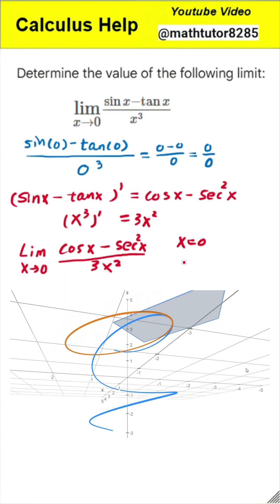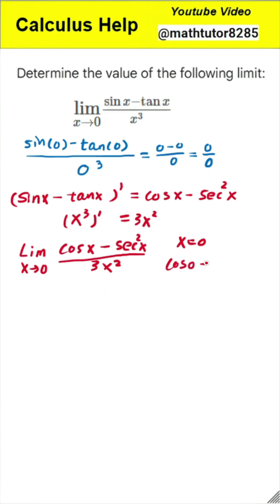Let's check this new limit by plugging in 0 for x. The numerator becomes cosine of 0 minus secant squared of 0, which is 1 minus 1, or 0. The denominator becomes 3 times 0 squared, which is 0. We still have the form 0 divided by 0, so we need to apply the rule again.